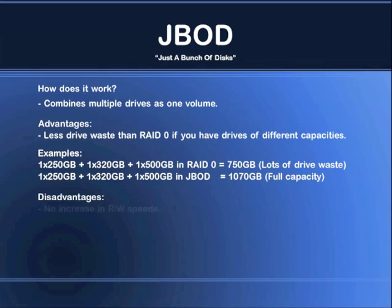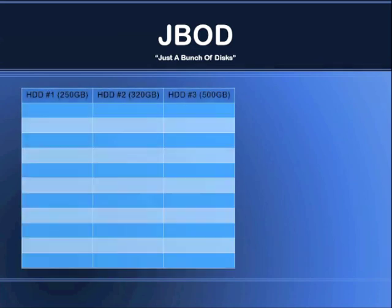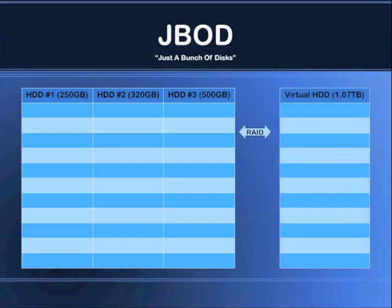Disadvantages with JBOD: you have no increase in performance when it comes to READ and WRITE speeds, and you have no redundancy. Here's an example — we have our three hard drives: one 250GB, one 320GB, and a third drive which is 500GB. And we have the controller. It doesn't have to be a RAID controller; it can be a disk utility in your operating system that offers you this JBOD function. When these three drives are combined, they will be presented to the operating system as one volume of 1.0 terabytes.